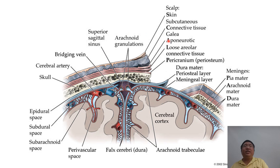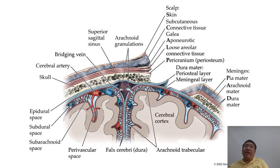Other components outside the brain tissue include the scalp, skin connective tissue, aponeurotic loose areolar connective tissue, and pericranium. We have three layers of meninges: pia, arachnoid, and dura. Underneath the arachnoid is the subarachnoid space. Major blood vessels usually lie within the subarachnoid space, including the circle of Willis. That is why when there is injury to the major blood vessels in the brain, the result is subarachnoid hemorrhage.